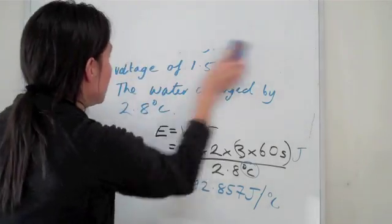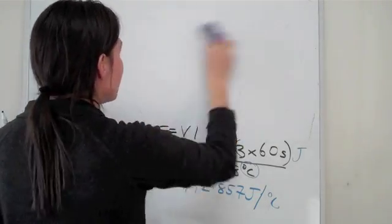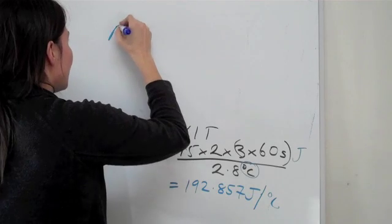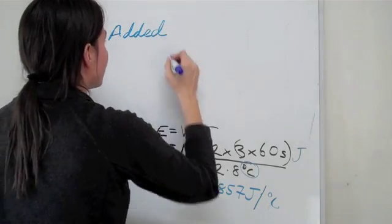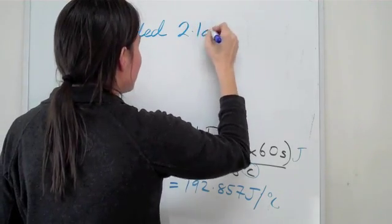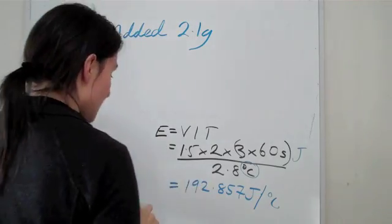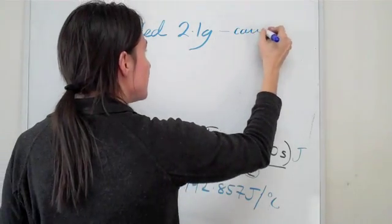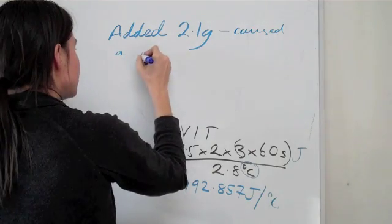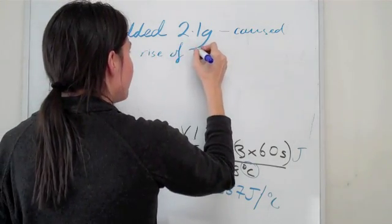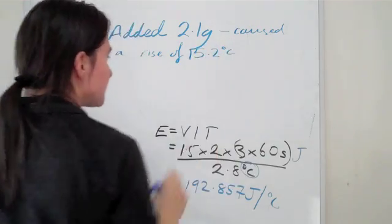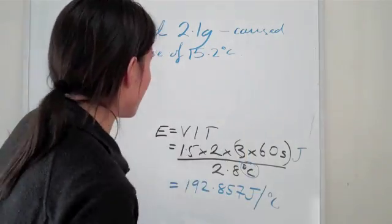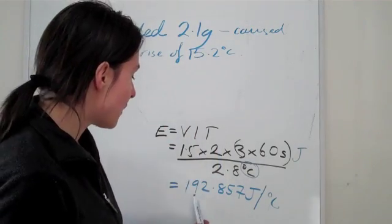Let me make part two of this question. Let's say we added a little slice of pizza. We added 2.1 grams of pizza. And we knew that the pizza caused a rise of 15.2 degrees Celsius. This is probably not possible but this is just an example so you get other ones in your book that are more realistic.